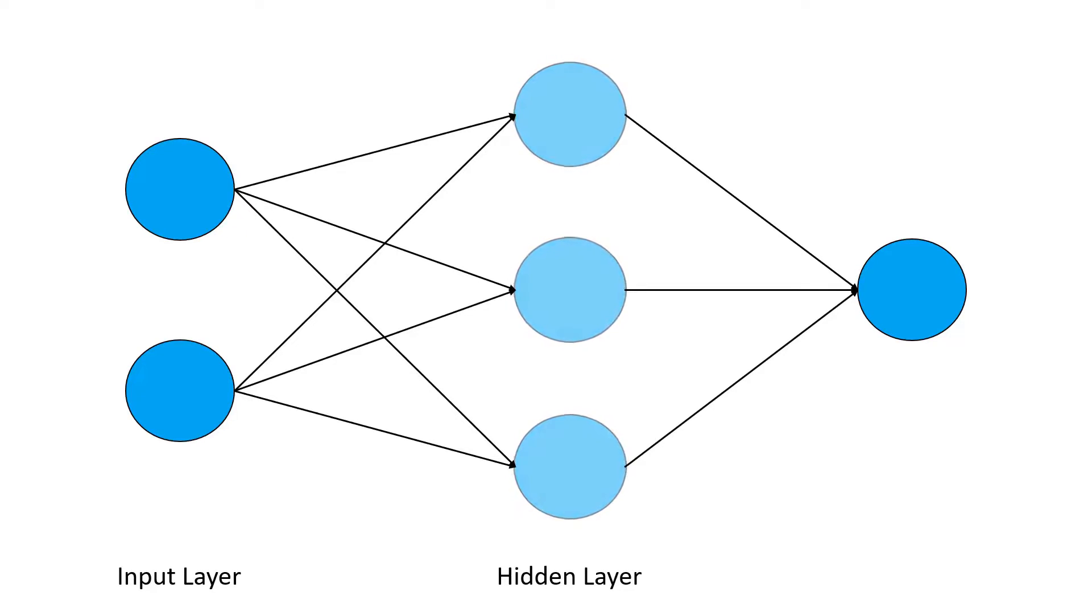They perform computations and then transfer the weights from the input layer to the following layer, which can be another hidden layer or in our case an output layer. And here we finally use in most cases an activation function to map the desired output in the format we want, but we also can take the raw output.